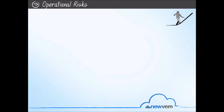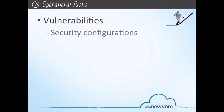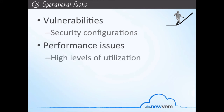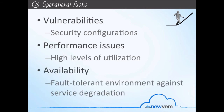What are the operational risks that we look at? First, we look at the vulnerabilities you may have from security configurations. Second, we look at performance issues that could occur from high levels of utilization. Third, we discuss availability and how you are able to create a fault-tolerant environment to withstand and be protected against service degradation.